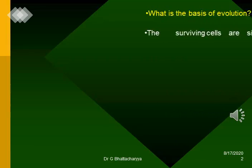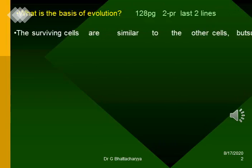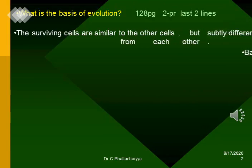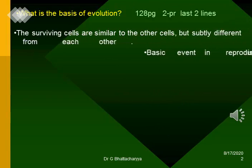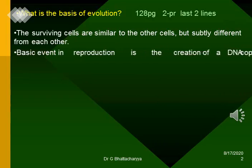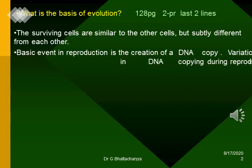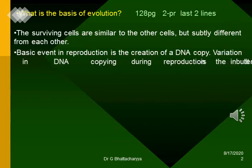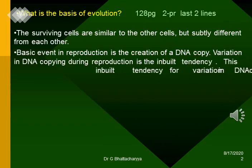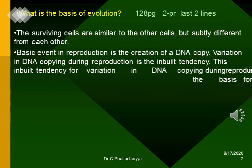What is the basis of evolution? The surviving cells are similar to other cells, but certainly different from each other. The basic event in reproduction is the creation of a DNA copy. Variation in DNA copying during reproduction is the inbuilt tendency, and this inbuilt tendency for variation in DNA copying during reproduction is the basis for evolution.